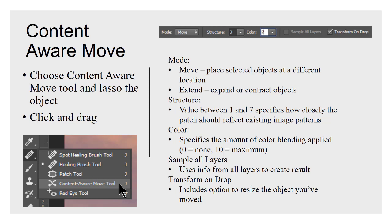Another similar tool is the Content Aware Move tool, located under the Healing Brush tools in that tool group — keyboard shortcut J, or hold Shift and press J repeatedly to cycle through nested tools. With this technique, select the object you want to move using any selection method, or use the Content Aware Move tool itself like a lasso. Grab the object and drag it somewhere else, and it will duplicate that object into the new place while backfilling where it came from with the surrounding area — kind of a combination of Content Aware Fill and the patch tool.